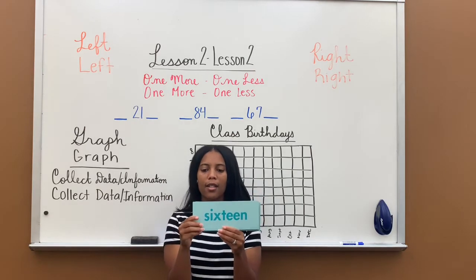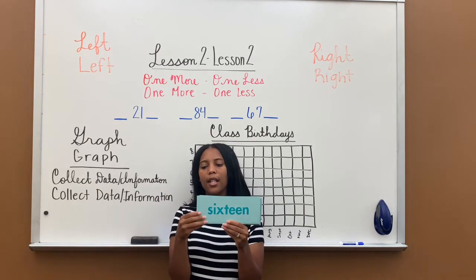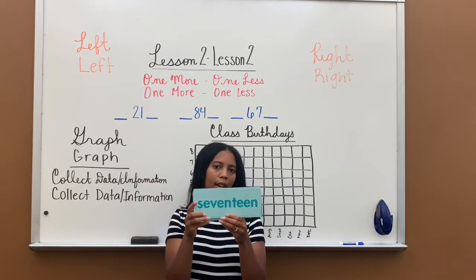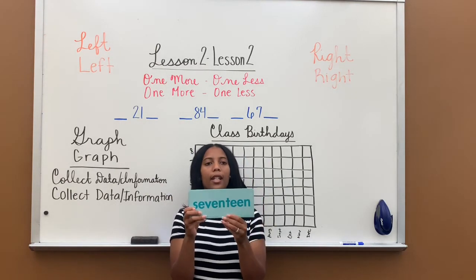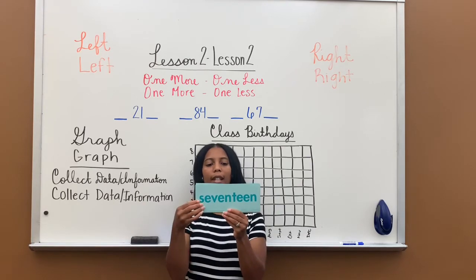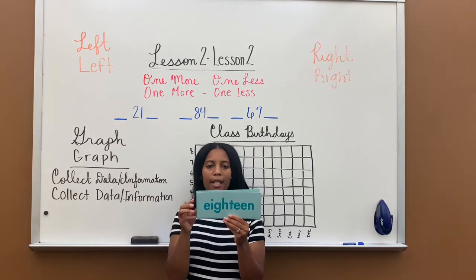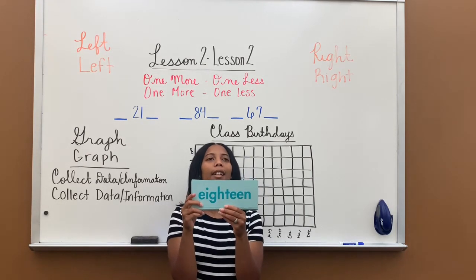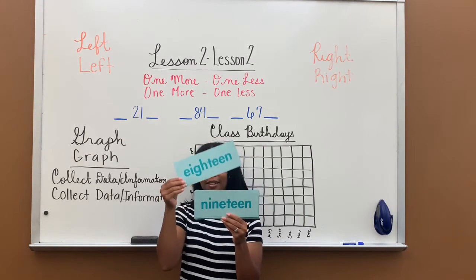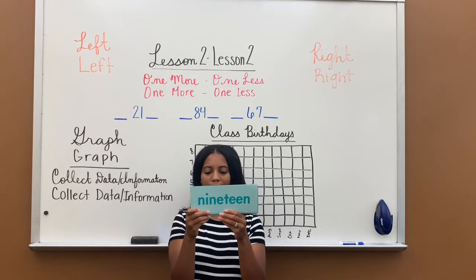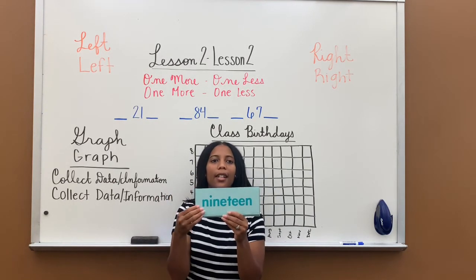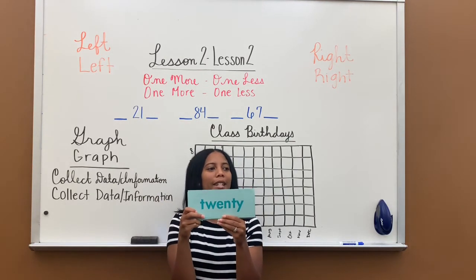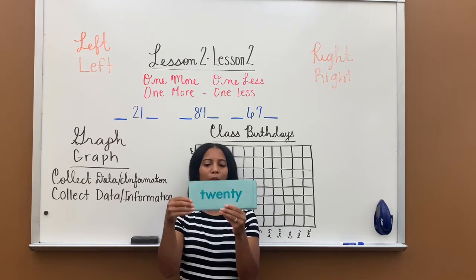Sixteen — S-I-X-T-E-E-N, sixteen. Seventeen — S-E-V-E-N-T-E-E-N, seventeen. Eighteen — E-I-G-H-T-E-E-N, eighteen. Nineteen — N-I-N-E-T-E-E-N, nineteen. A lot of E's in that one. Twenty — T-W-E-N-T-Y, twenty.